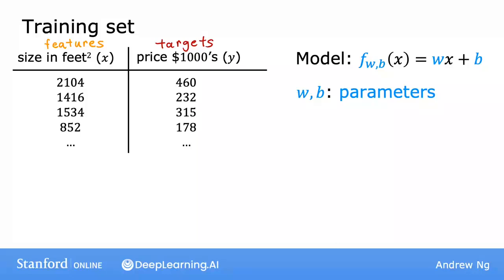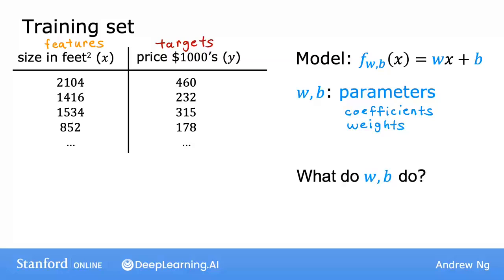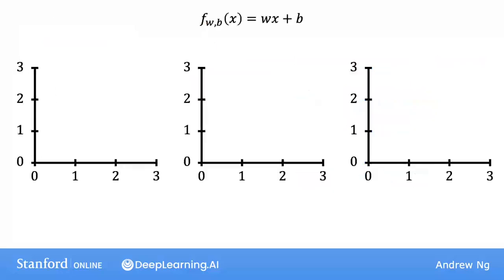Sometimes you also hear the parameters w and b referred to as coefficients or as weights. Let's take a look at what these parameters w and b do. Depending on the values you've chosen for w and b, you get a different function f of x, which generates a different line on the graph. And remember that we can write f of x as a shorthand for f_wb of x.